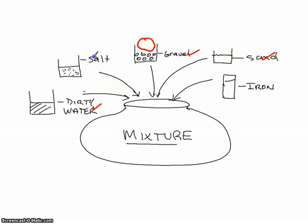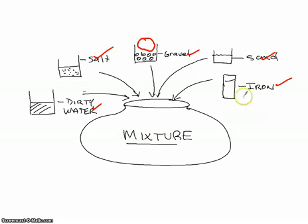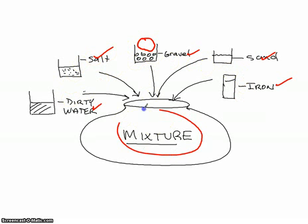I put in some rock, I threw in some pure salt — sodium chloride — and we threw in some iron filings, which looked a lot like dark sand. You couldn't really tell. All of these things got mixed up together in our mixture, and I asked how many people could separate these back?